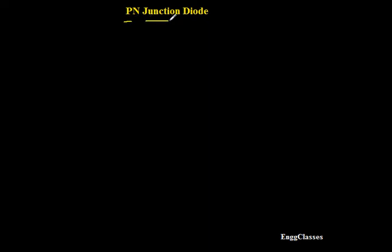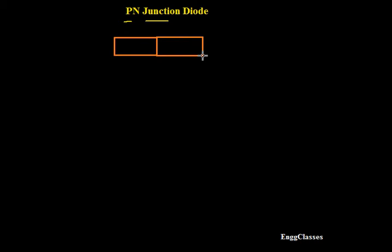As the name itself says, P-N junction — here we are going to consider a P-type semiconductor material and an N-type semiconductor material and combine them chemically. So when I combine these two together I am going to get a P-N junction diode.